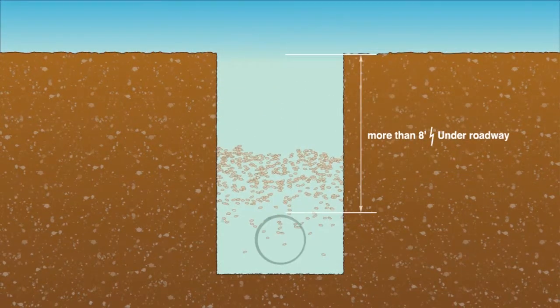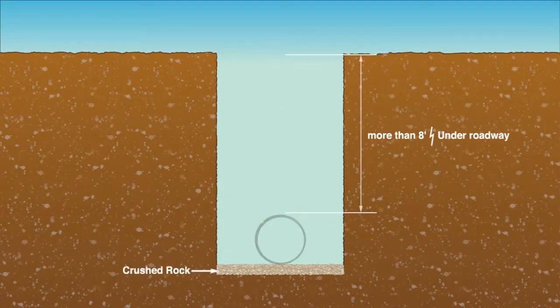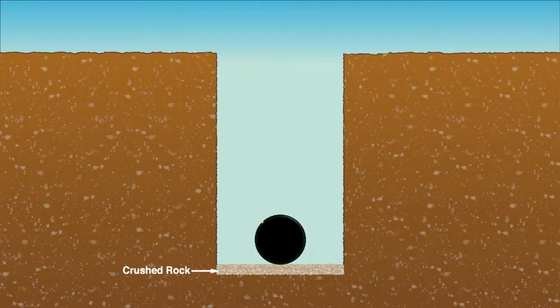For pipe with burial depths greater than 8 feet or under roadways, proper bedding must be placed. Continue backfilling by adding crushed rock to the haunch area of the pipe, making certain to leave no voids.